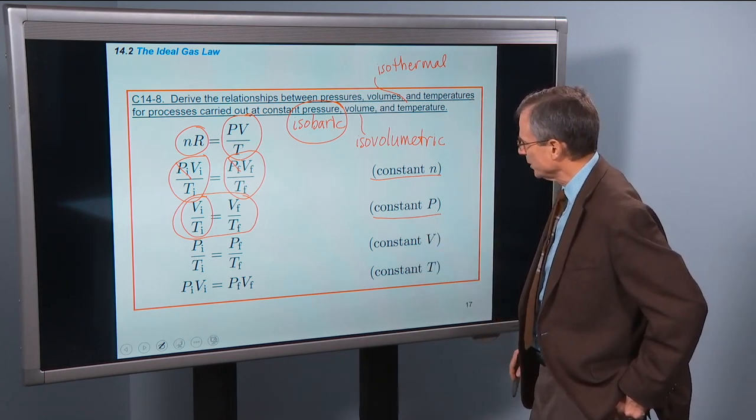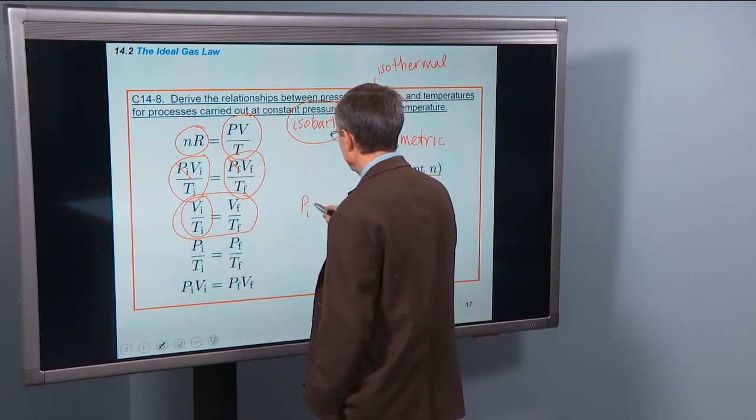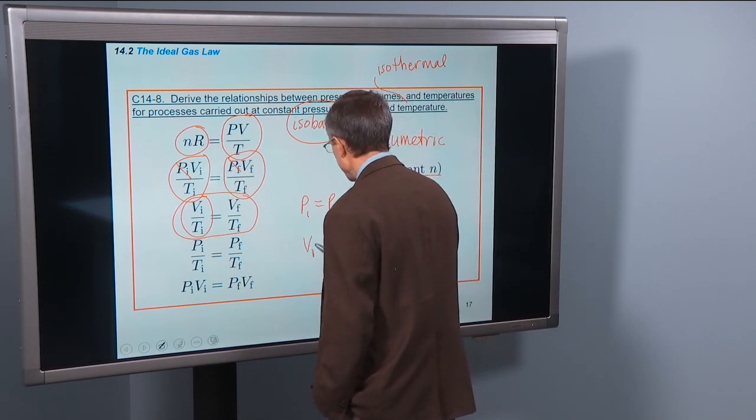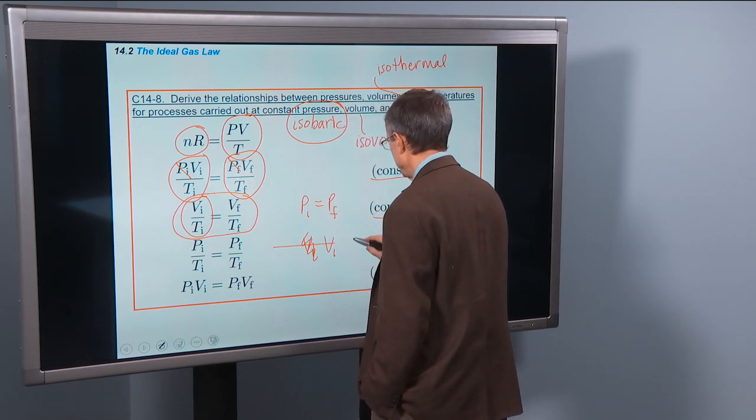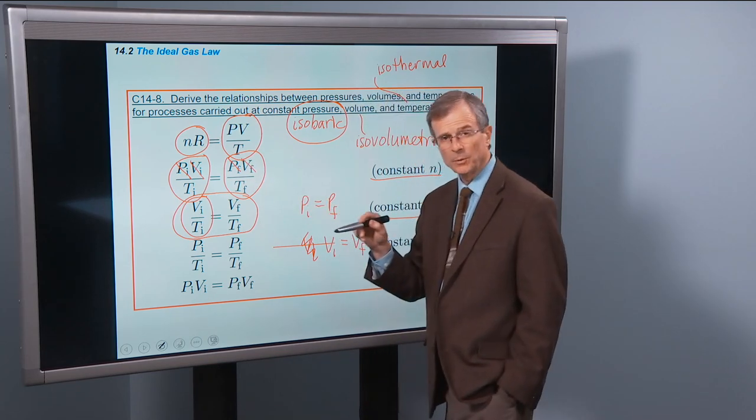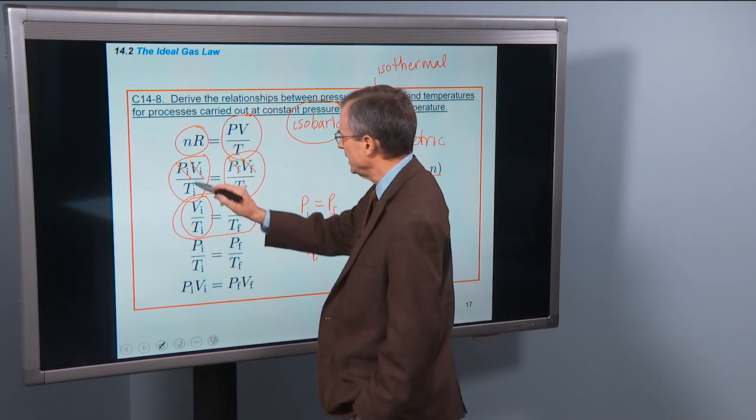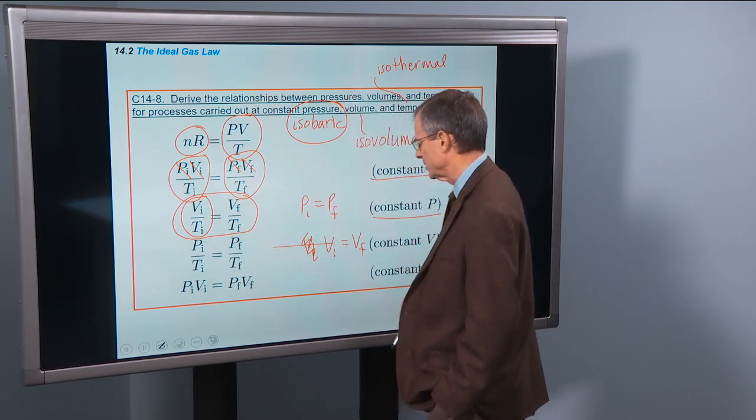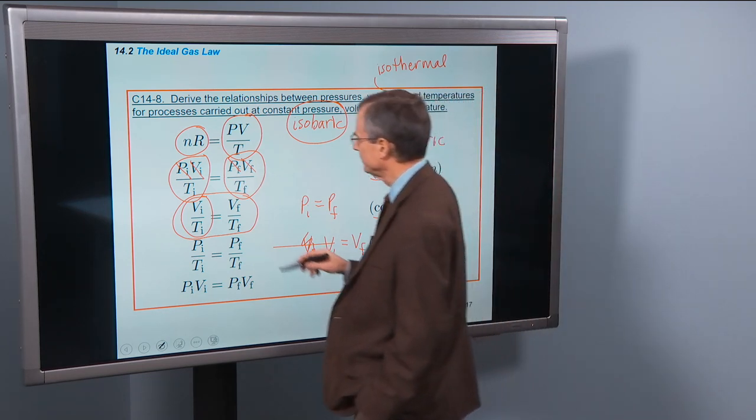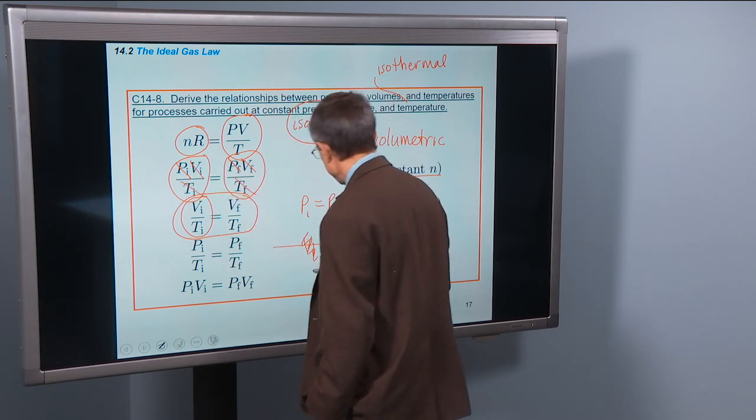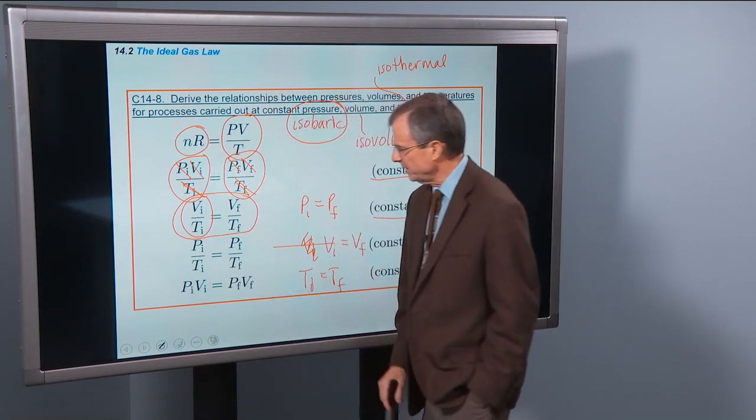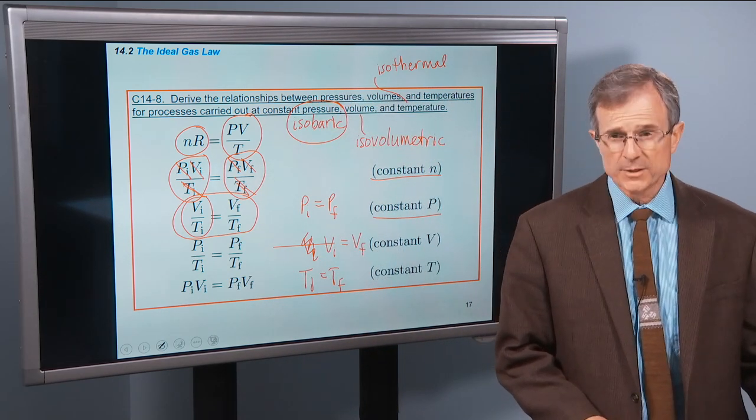Constant V, an isovolumetric process. So for constant P, we just simply say that PI equals PF, right? And we've canceled out the PI and the PF. And so we go back to the same equation. But in this case, the VI and the VF are equal to each other. And we cancel them out. So we get just PI over TI equals PF over TF. That's how we get this one. Then a process, and I think you're getting the idea here, a process carried out at constant temperature, then TI equals TF. And these guys cancel, and we just end up with PV initial equals PV final. I'm going to give you a chance to practice some of those.